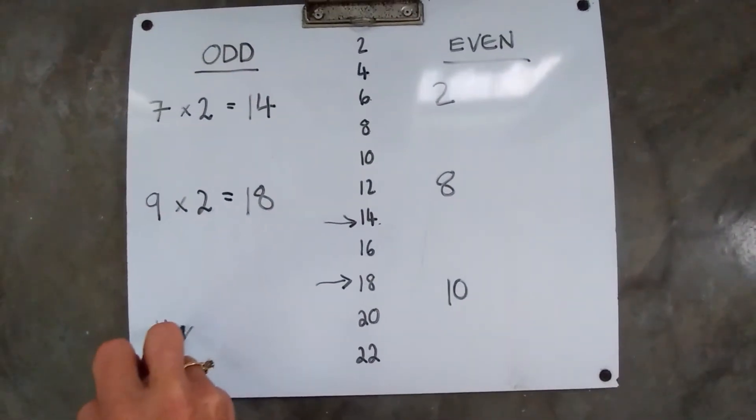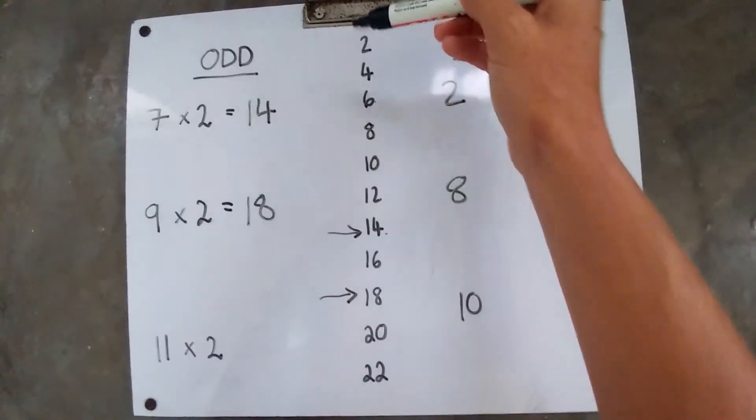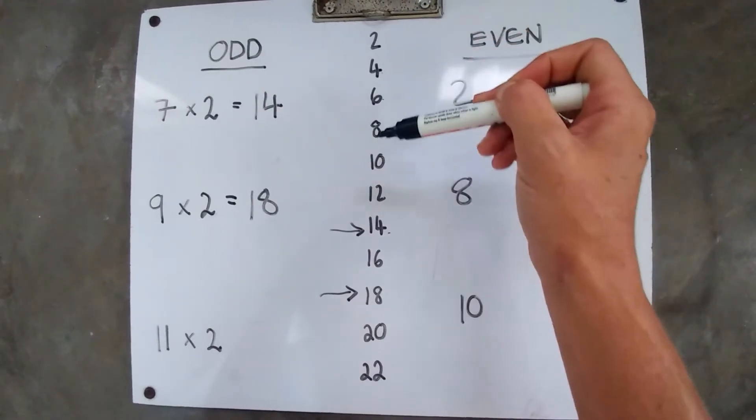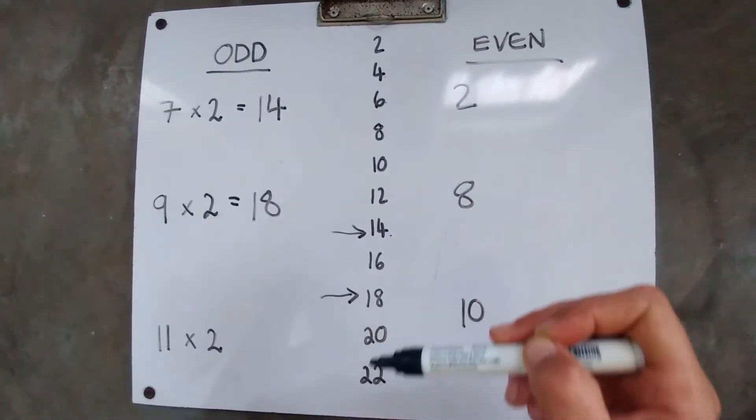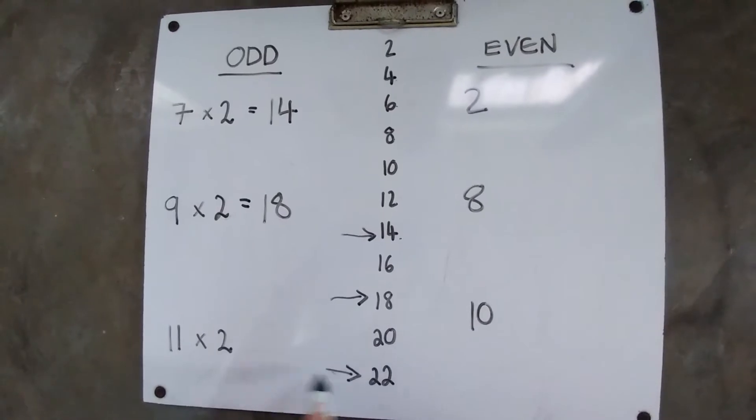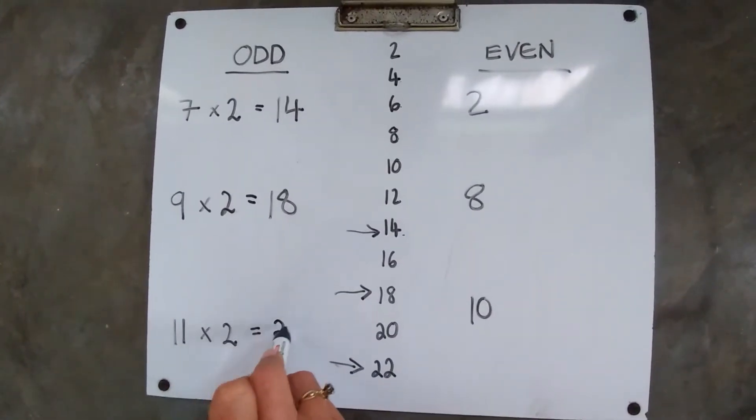What about 11? Now I'm counting a long way. 1, 2, 3, 4, 5, 6, 7, 8, 9, 10, 11. All the way to the end, which means it equals 22.